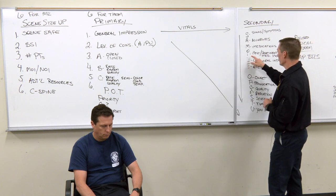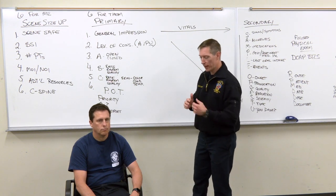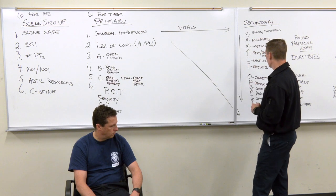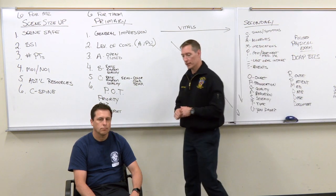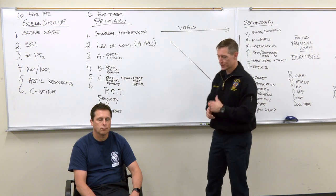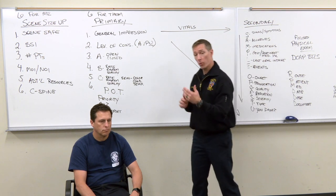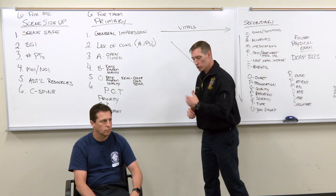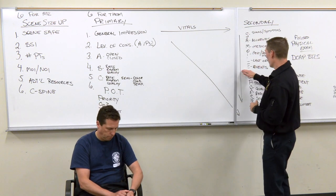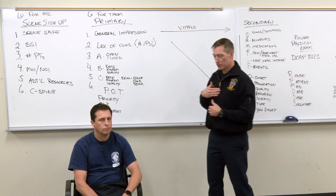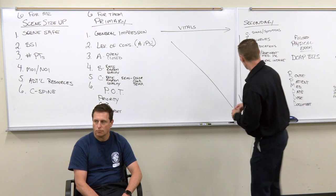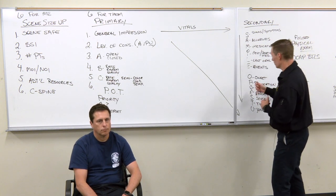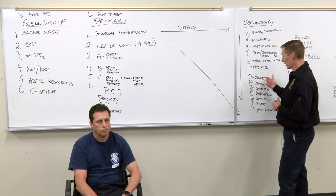Past pertinent medical history: diagnosed with angina, had a stent placed two years ago, high cholesterol and high blood pressure. Last oral intake: lunch about an hour ago — turkey sandwich, chips, and a Coca-Cola, which is normal for him. Events: push mowing his lawn when this started. For OPQRSTU — onset: came on within about 60 seconds of mowing and has been there ever since. Provocation: coming inside and sitting down has made it a little better, but it's still present.